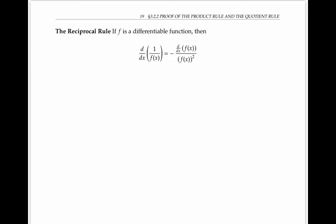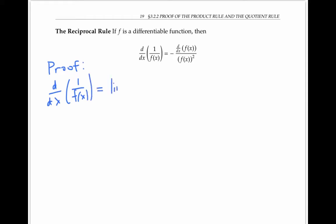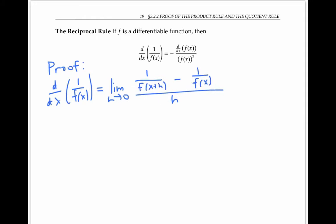Before we go on to prove the quotient rule, it'll be really handy to prove the reciprocal rule, which states that the derivative of the reciprocal — one over f(x) — is given by negative the derivative of f(x) divided by f(x) squared. So to prove this fact, let's start as usual with the definition of derivative. So the derivative of 1/f(x) is the limit as h goes to zero of [1/f(x+h) minus 1/f(x)] over h. Now these fractions are just crying out to be combined by finding a common denominator — that common denominator is f(x+h) times f(x). So let me do that.